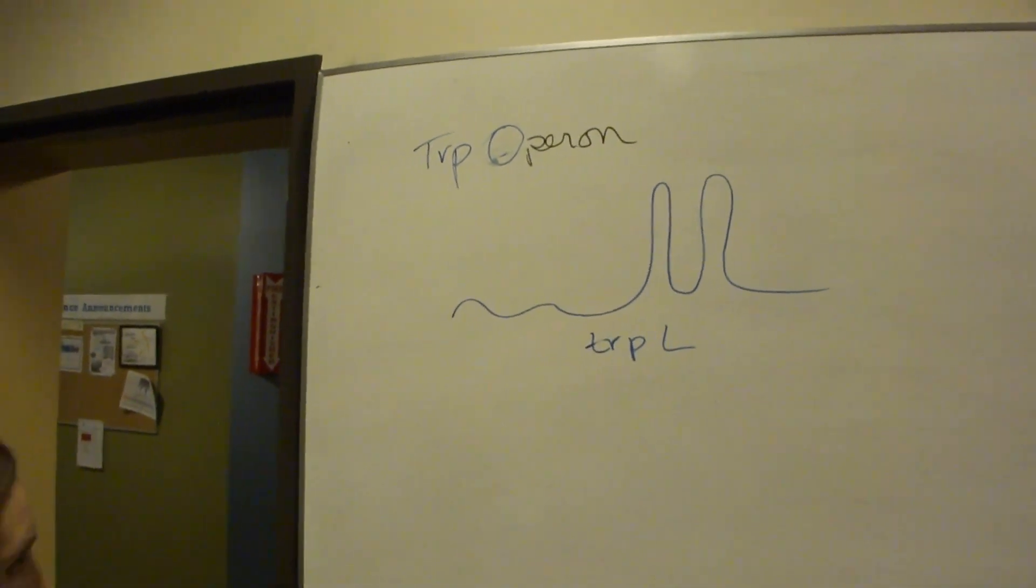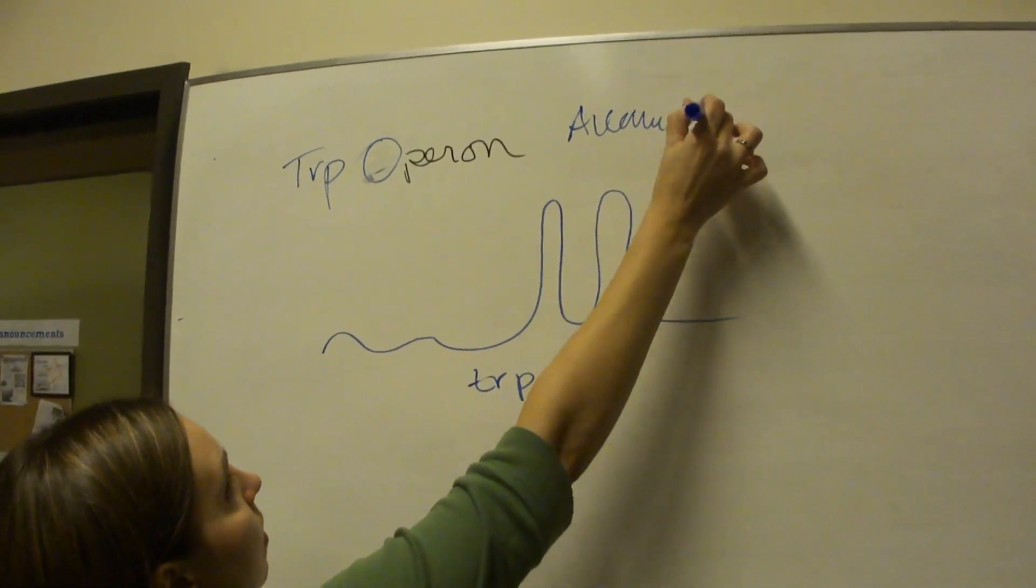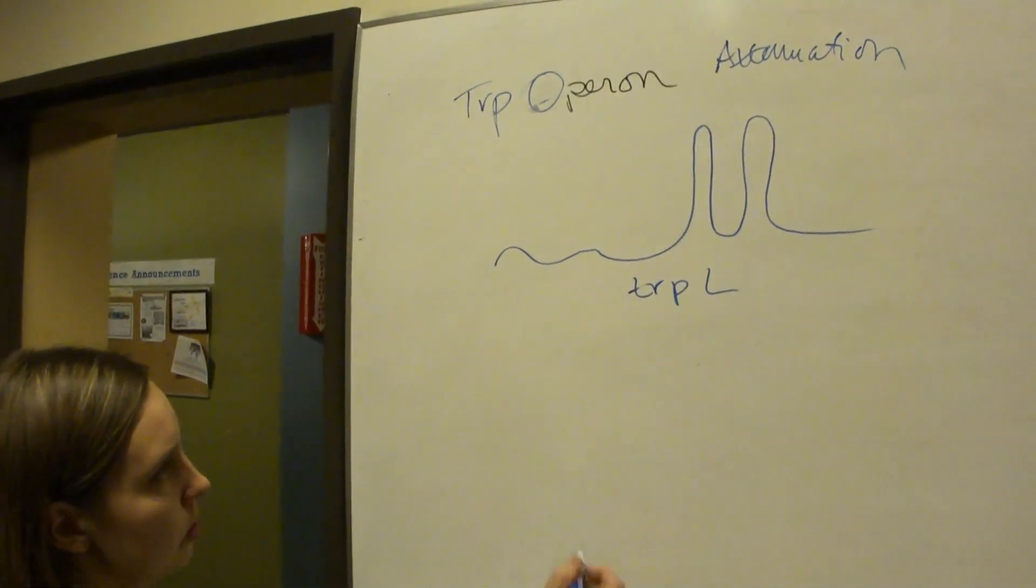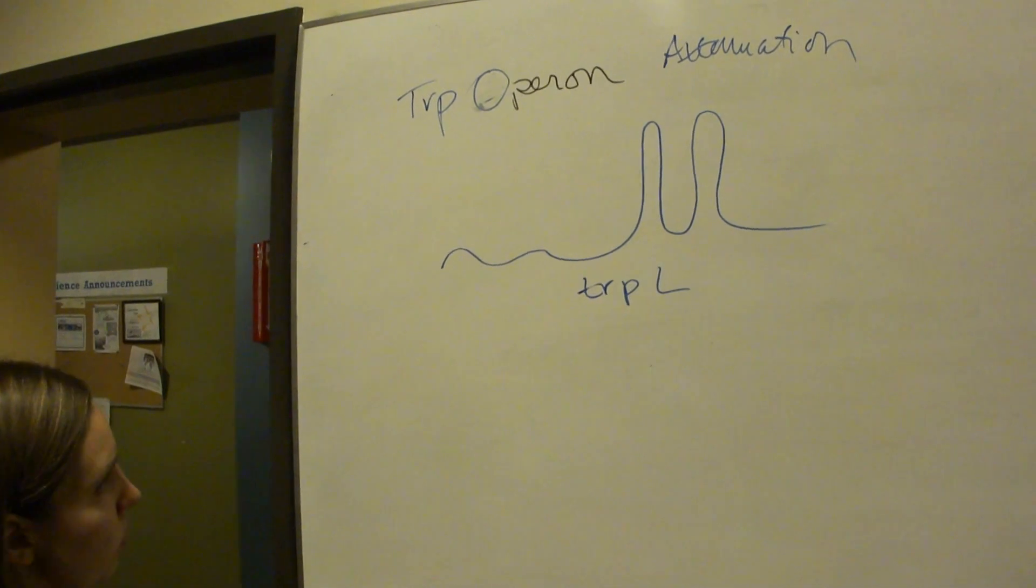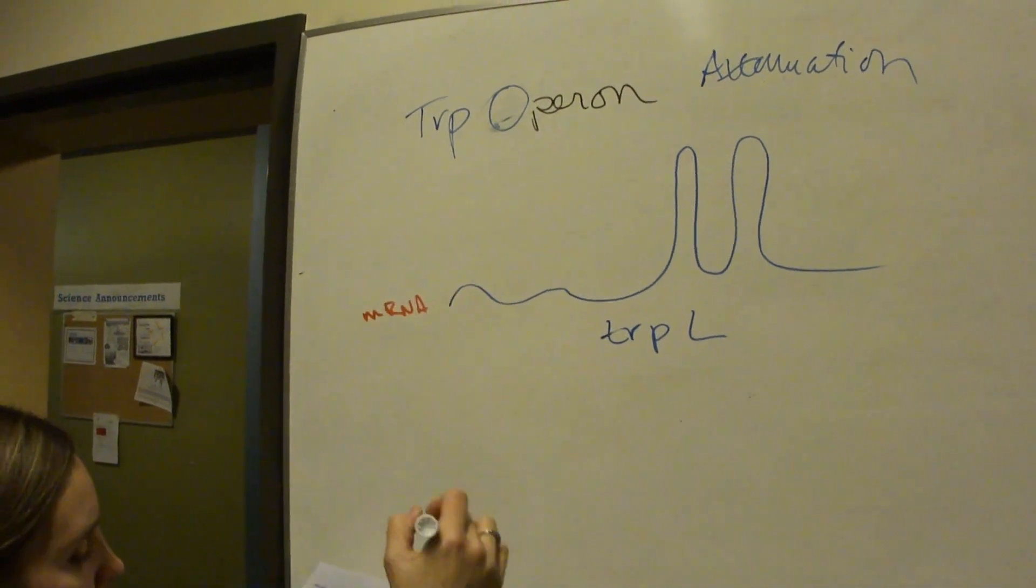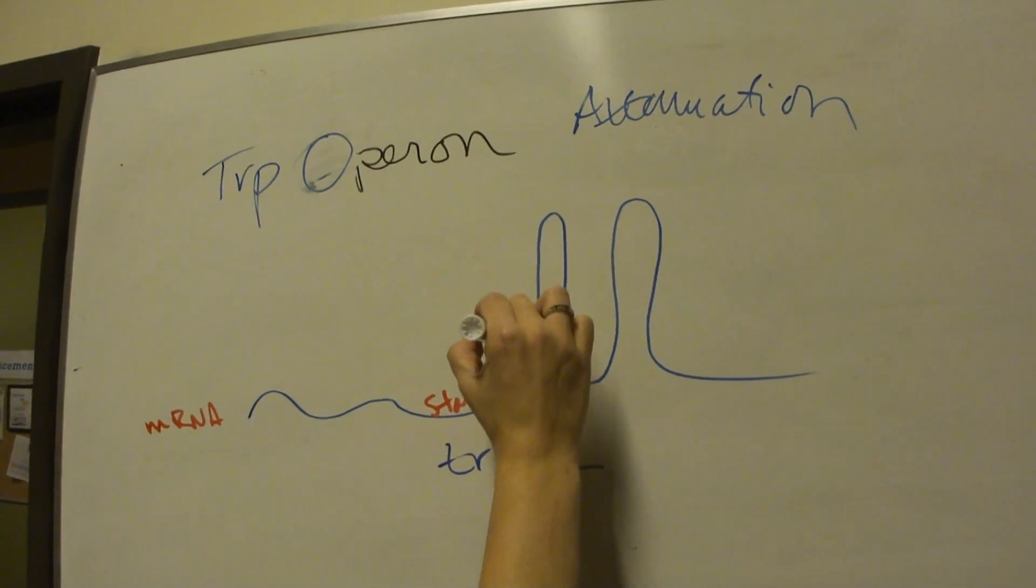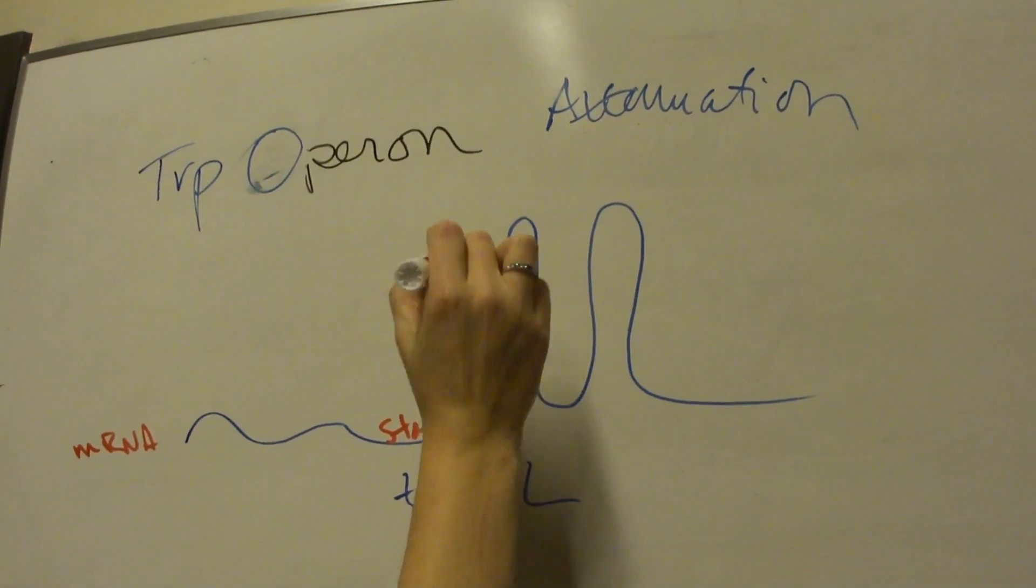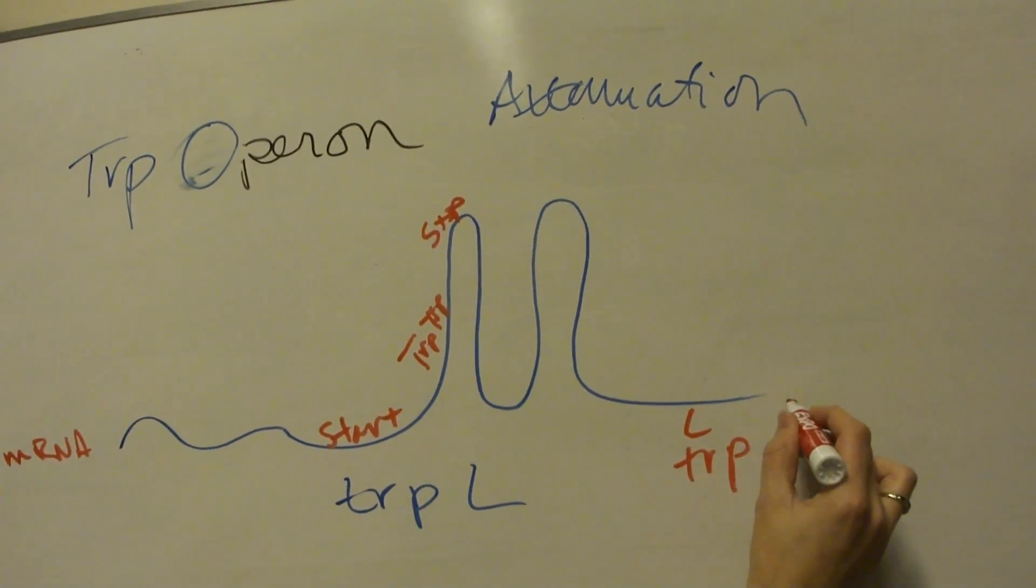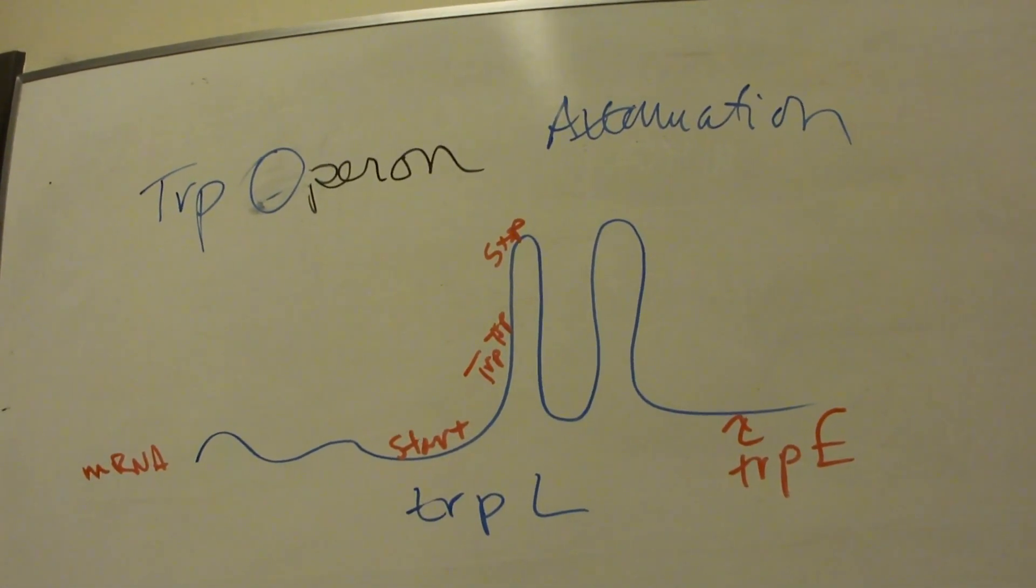We're talking about attenuation in the trp operon leader sequence. In this case, we have stem loops that can form. There are a couple different regions that are important to know about in trp L. So on the mRNA you have a start, a ribosome binding site, you also have two trp codons here, then a stop codon, and then somewhere down here the first trp gene starts, I believe it's trp E.